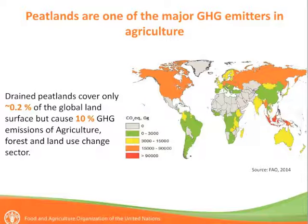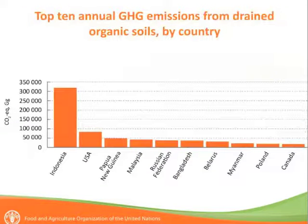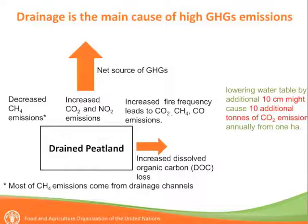Peatlands are currently major greenhouse gas emitters in agriculture. It is estimated that around 0.2% of global land surface is covered by drained peatlands, but they already cause at least 10% of greenhouse gas emissions from the agriculture, forests, and land use change sector. Following enteric fermentation, most of the emissions come from Southeast Asia, led by Indonesia, then USA, Papua New Guinea, Malaysia, Russian Federation, Bangladesh, Belarus, Myanmar, Poland, and Canada.